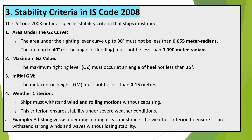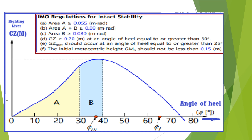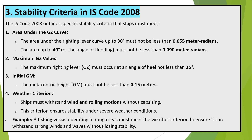Stability criteria in IS Code 2008. The IS Code 2008 outlines specific stability criteria that ships must meet. Area under the GZ curve: the area up to 30 degrees must not be less than 0.055 metre-radians; the area up to 40 degrees, or the angle of flooding, must not be less than 0.090 metre-radians. Maximum GZ value: the maximum righting lever must occur at an angle of heel not less than 25 degrees. Initial GM: the metacentric height must not be less than 0.15 metres. Weather criterion: ships must withstand wind and rolling motions without capsizing. For example, a fishing vessel operating in rough seas must meet the weather criterion to ensure it can withstand strong winds and waves without losing stability.